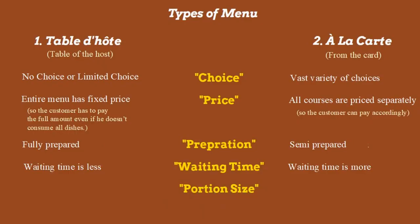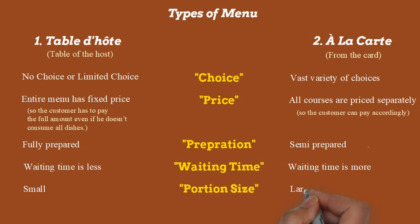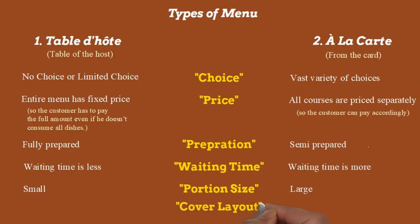Another parameter for differentiation is portion size. The portion size in the table d'hôte menu is small, whereas the portion size in the à la carte menu is bigger or larger. Another difference is the cover layout: in the table d'hôte menu we have a set menu for the entire day, so we know in advance exactly which dishes and courses are to be served when the guest arrives at the table.